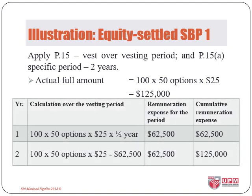The following distributions of the full amount apply: For year one, the SBP expense will be $62,500 given by 100 options for 50 employees at the fair value of $25 for half of the vesting period. For year two, the SBP expense will also be the same. The cumulative expense will be $62,500 at the end of year one and $125,000 at the end of year two. These values will be recorded by debiting SBP expense and crediting equity at the end of every year.